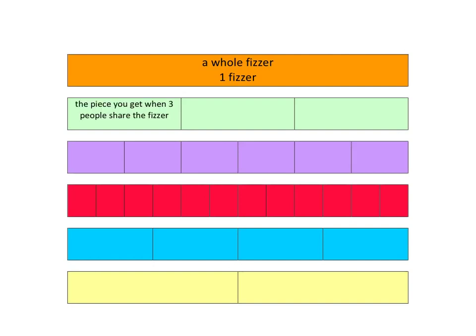If we focus on the green fizzer now — imagine I've taken that green fizzer and given it to three learners and told them they must share it fairly between them. They need to cut it into one, two, three pieces and then each of them will get one of those pieces. So this piece is called one third. We write that as one third, and in that name there is information: it tells us we've cut that fizzer into three pieces and the person is getting just one of those three pieces.